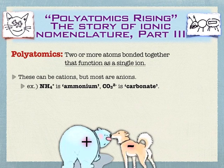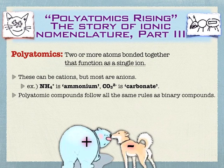For anions, you think of things like carbonate, chlorate, things like that. Get a common list of these and you'll have that as a resource for you later. They pretty much follow the same rules as binary compounds — they have to be electrically neutral and they have to be charge balanced.